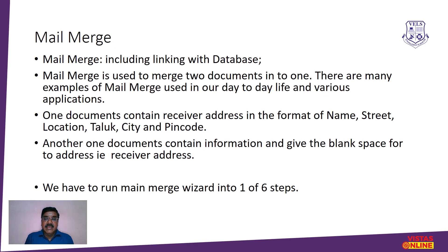In mail merge, the first document is the source document — the information document — where we type and complete all alignment. The receiver addresses are left blank, and the from-address and body of the letter, including replies, should be completed. Then we provide provisions for the receiver addresses. One document contains the information and another document contains the addresses.